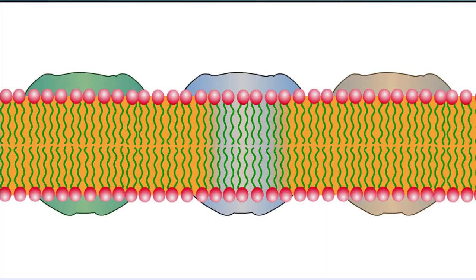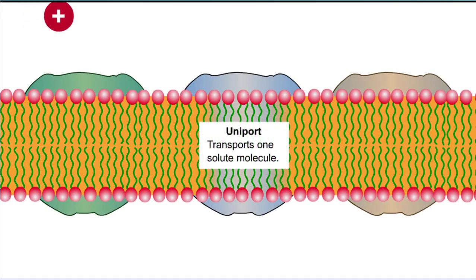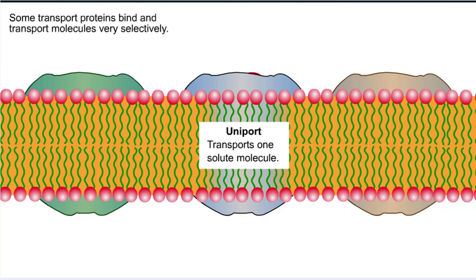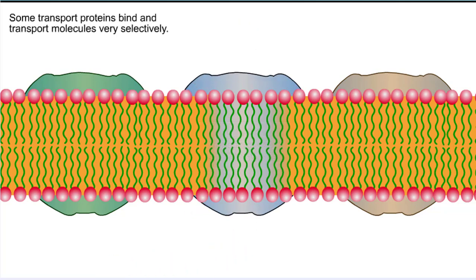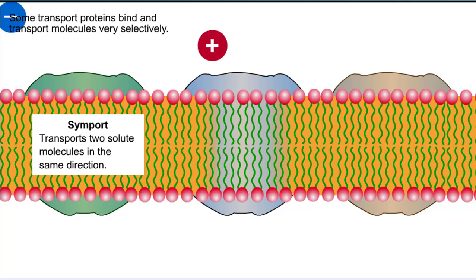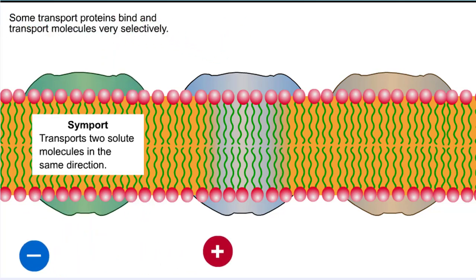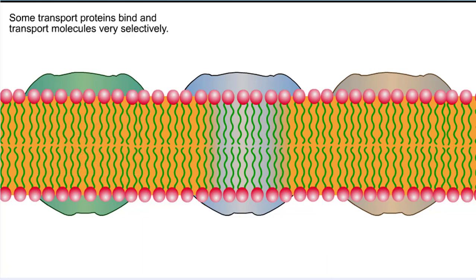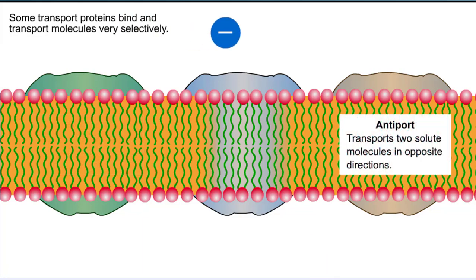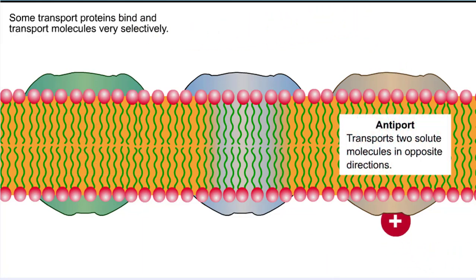Some transport proteins do not have a channel or pore, but instead bind molecules very selectively and change their structure to allow them to pass to the other side of the membrane. These bind-and-release conformational transporters can be classified as either uniport, symport, or antiport.